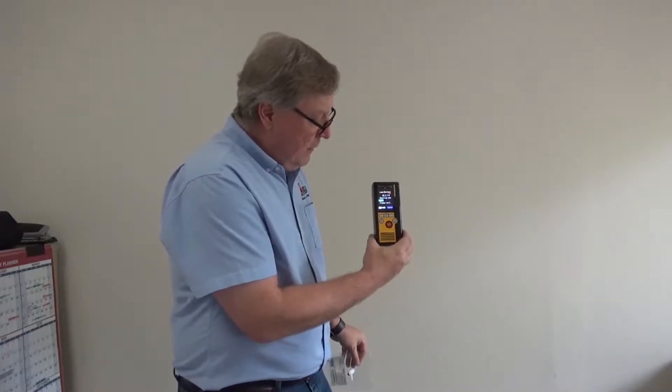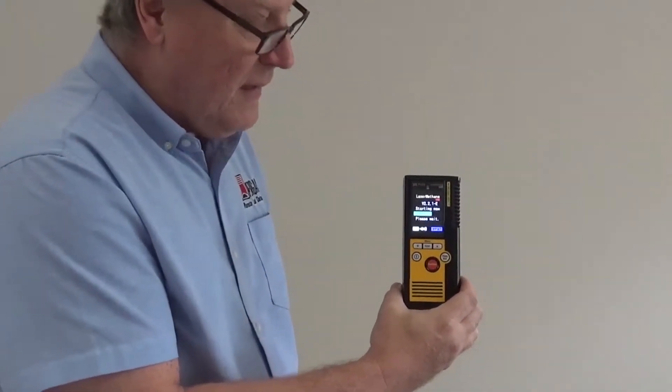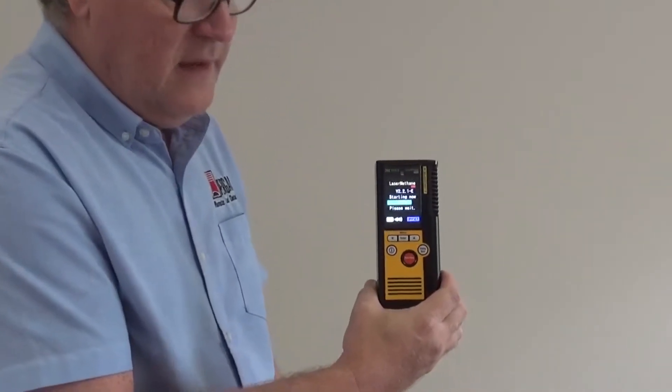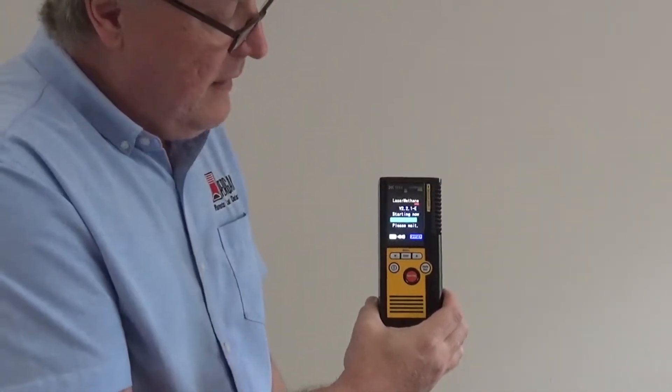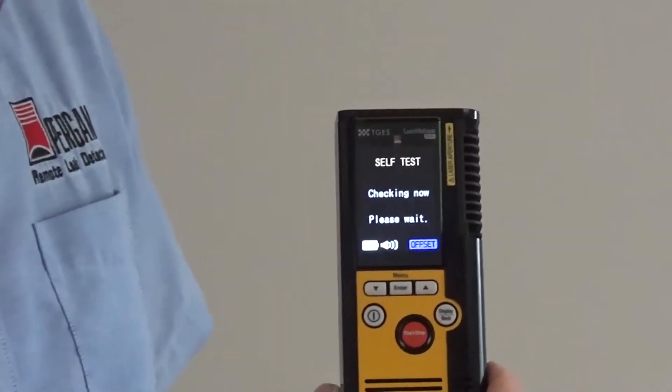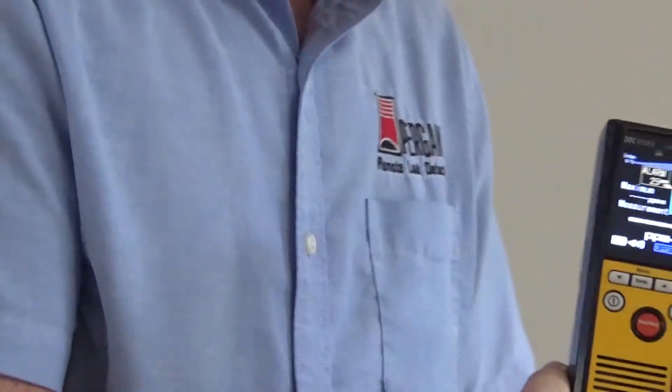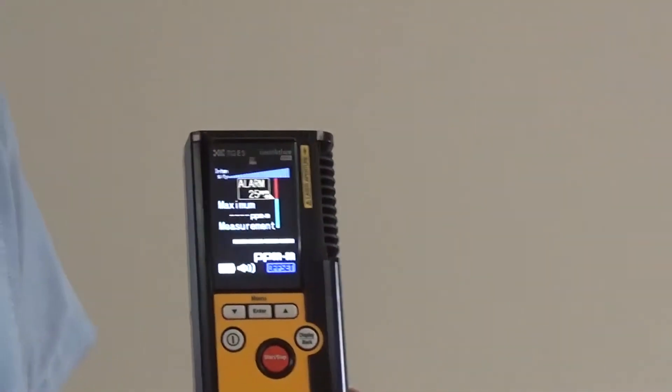Once again, we have the blue line moving across the screen here from right to left. This indicates that the instrument is going through its self-calibration process. If you do not see this blue line, then please turn the instrument off again and repeat the same procedure.